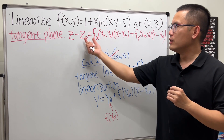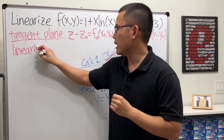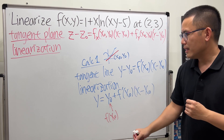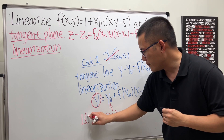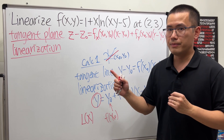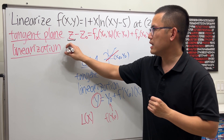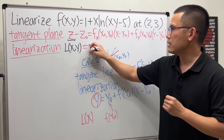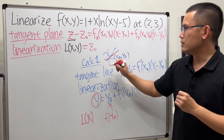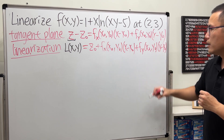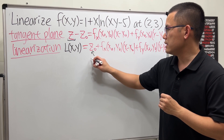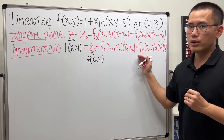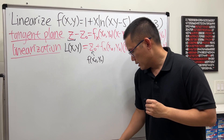If you want to find the linearization of this, just move z0 to the other side. The linearization L(x, y) equals z0 plus f_x(x0, y0)(x − x0) plus f_y(x0, y0)(y − y0), where z0 is precisely the value of the function at (x0, y0). Now let's go ahead and get all the ingredients, namely the partial derivatives.